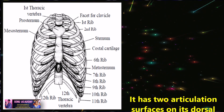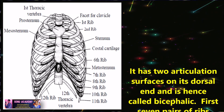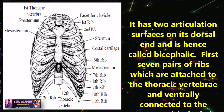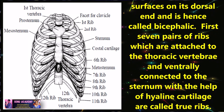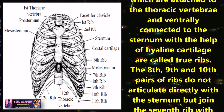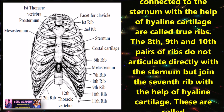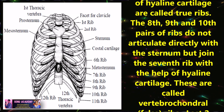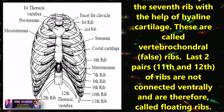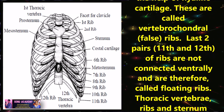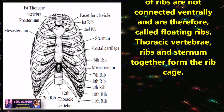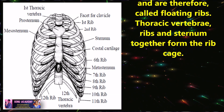It has two articulation facets on its dorsal end and is bicephalic. The first seven pairs of ribs, which are attached to the thoracic vertebrae and ventrally connected to the sternum with the help of hyaline cartilage, are called true ribs. The 8th, 9th, and 10th pairs of ribs do not articulate directly with the sternum but join with the help of hyaline cartilage. These are called vertebrochondral ribs. The last two pairs, the 11th and 12th ribs, are not connected ventrally and are therefore called floating ribs.